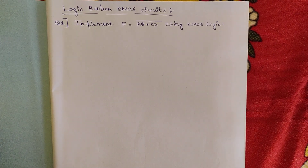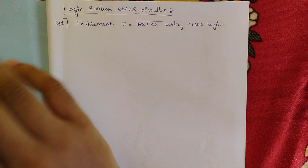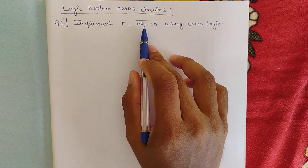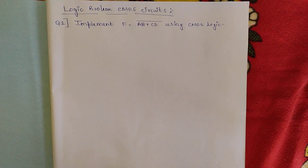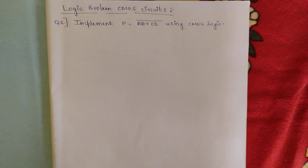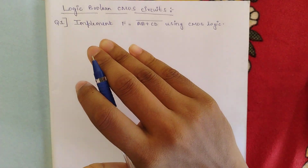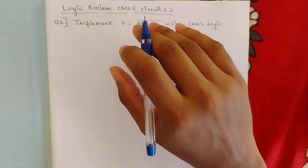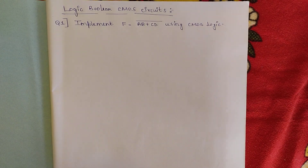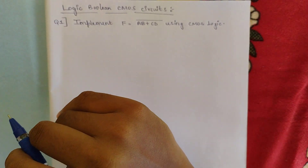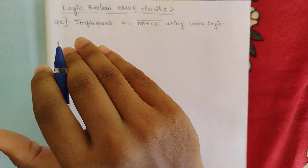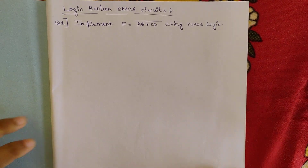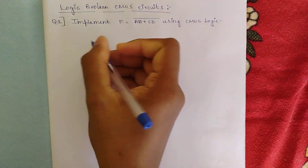Some previous videos of the introduction part are available in the channel playlist, please go and watch those. So this is the first question: implement F = (AB + CD)̄, the whole complement, using CMOS logic. The CMOS circuit consists of PMOS transistors and NMOS transistors. In CMOS we have two parts — the pull-up network and the pull-down network. The pull-up network consists of all PMOS transistors, and the output is seen between pull-up and pull-down networks. First draw the VDD supply.